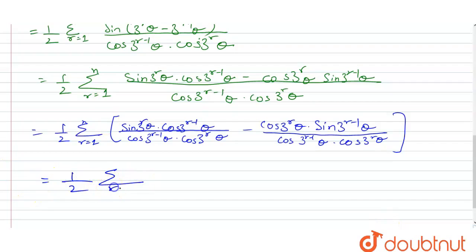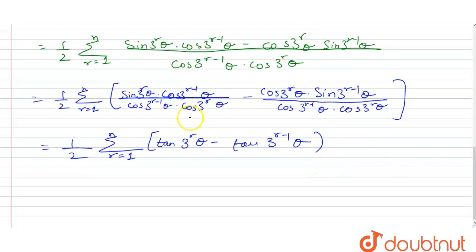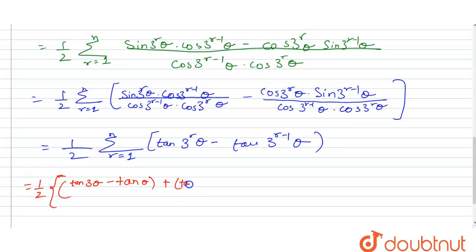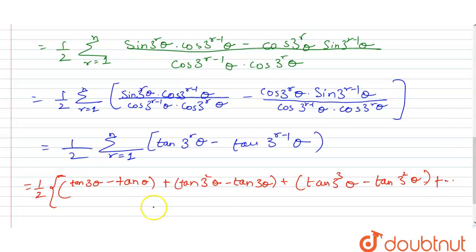We finally get 1/2 times the summation, which evaluates to: tan 3θ − tan θ, plus tan 3²θ − tan 3θ, plus tan 3³θ − tan 3²θ, and continuing up to tan(3^n θ) − tan(3^(n-1)θ).